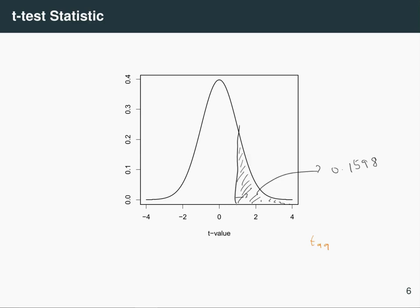And the p-value here, this area, is 0.1598. This is a value that is bigger than the five percent threshold that we set for our hypothesis test, so we would fail to reject the null hypothesis here.